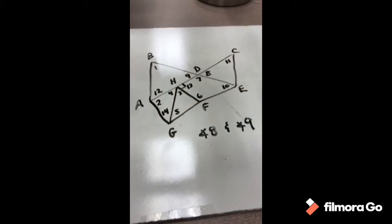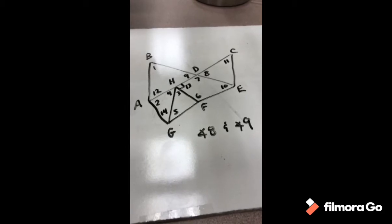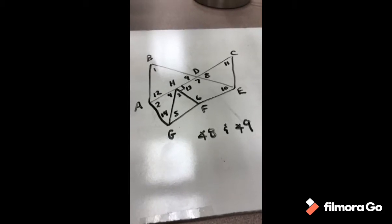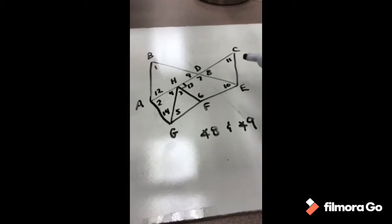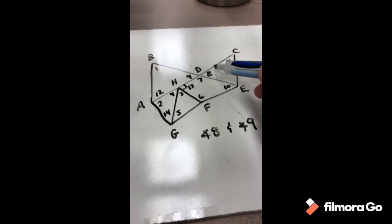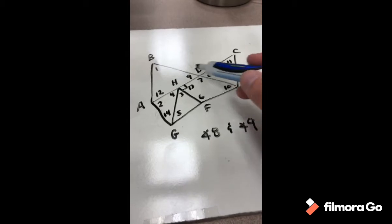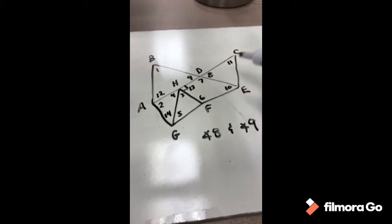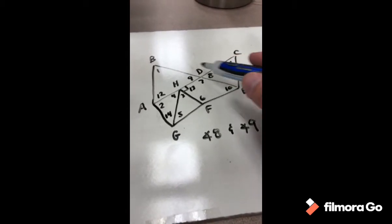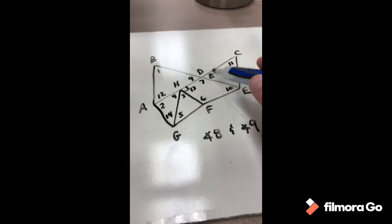Now look at the relationship between angle 8 and angle 9. Angles 8 and 9 are opposite each other and share the same two intersecting lines, so we call those vertical angles.